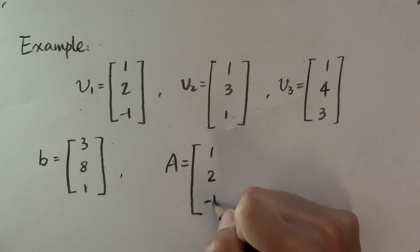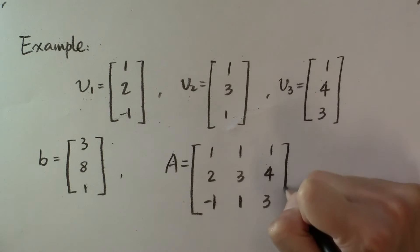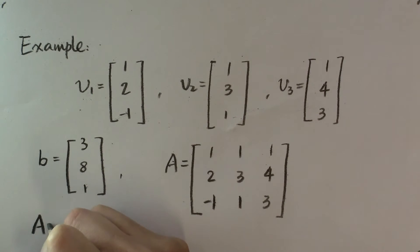The column vectors are [1, 2, -1], [1, 3, 1], and [1, 4, 3]. Now solve the linear system Ax = b for the vector x.